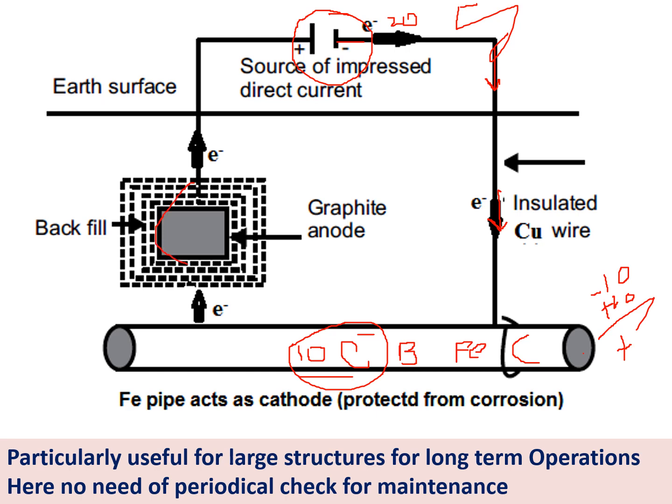The excess electrons are collected by a graphite anode, which acts only as a conducting metal — it accepts the excess electrons, which travel through the earth and back to the battery, closing the circuit. This method is generally used for large structures and long-term operations. There is no need to check whether magnesium or zinc is present, and no need to replace anything, because we are controlling the current from the surface. As long as electricity is supplied, the metal is protected — it is in our control to maintain continuous electron flow to the base metal.